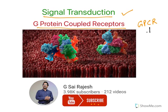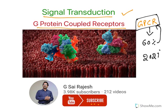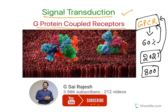G-protein coupled receptors are very important receptors. 60% of modern medicine will somehow act on G-protein coupled receptors. The sensations of touch, taste, and temperature are all sensed by G-protein coupled receptors. The 2021 Nobel Prize for Physiology was given to scientists who identified how pain sensation and temperature are perceived, and both are mediated by G-protein coupled receptors. There are almost 800 types of G-protein coupled receptors present in the human body.